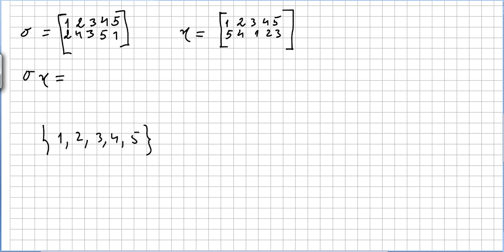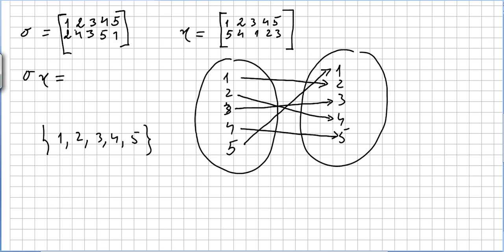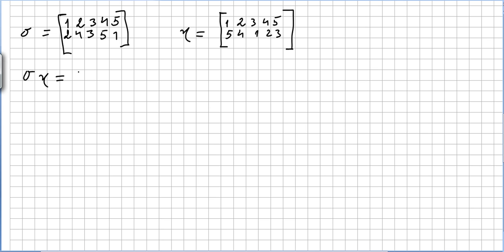It will be quite easy to draw a diagram for sigma: 1 goes to 2, 2 goes to 4, 4 goes to 5, 5 goes to 1 — forming a cycle — and 3 goes to 3, fixed. You can do the same for gamma.